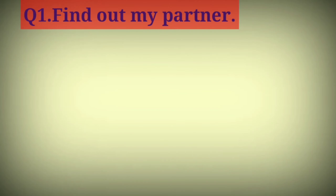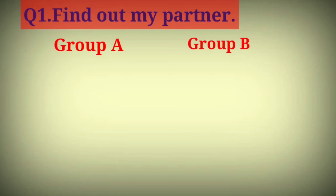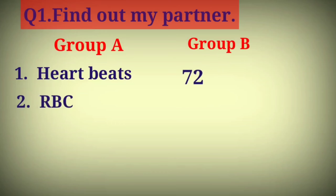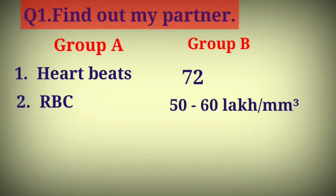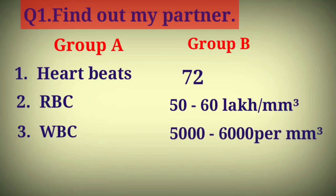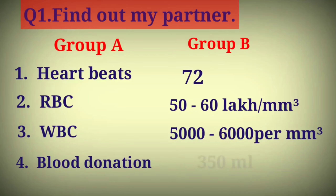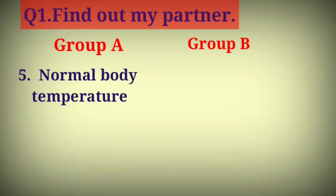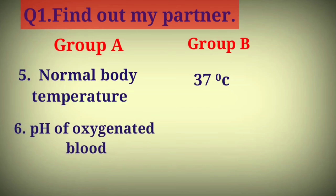Question 1 – Find out my partner. Group A and Group B answers: Number 1 – heart beats 72; Number 2 – RBC 50 to 60 lakh per cubic millimeter; Number 3 – WBC 5000 to 6000 per cubic millimeter; Number 4 – blood donation 350 ml; Number 5 – normal body temperature 37 degrees Celsius; Number 6 – pH of oxygenated blood 7.4.